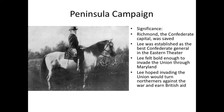Another reason Lee wants to invade the North is to earn British support. Britain was considering joining the Confederacy to have access to southern cotton, which they were struggling to get because of the northern blockade. But Lee knew the British would not join unless they thought the Confederacy actually had a chance — similar to how the French wanted to support the United States in the Revolution only if they thought America had a decent chance of winning. Ultimately Lee will fail to prove that to the British at the Battle of Antietam.